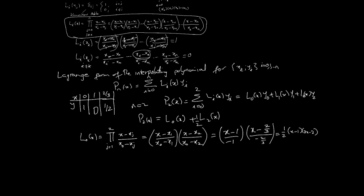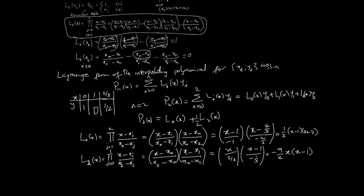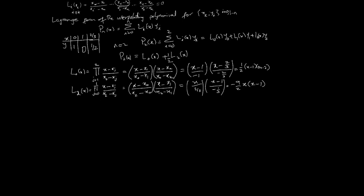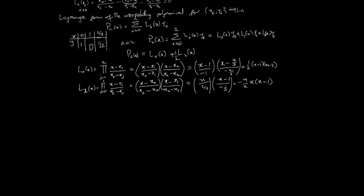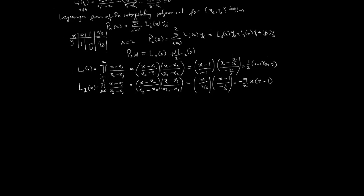We don't need l1; let's go directly to l2(x). For i = 2, we multiply over j = 0 to 1, skipping j = 2. Substituting the values gives l2(x), which after simplification yields a specific expression. Now let's collect all pieces together to form the complete polynomial.